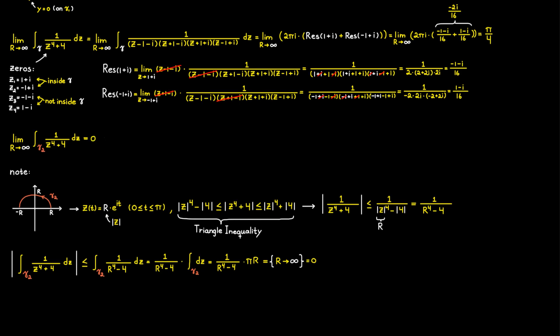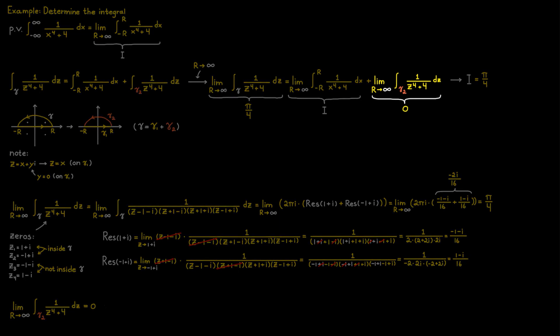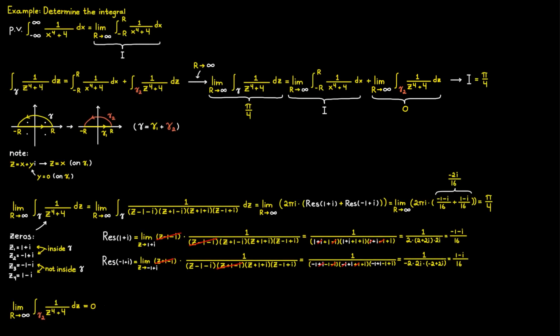Inserting this result, we find that i equals pi divided by 4. In short, we used Cauchy's residue theorem to get the left side of the equation, and the limit on the right is equal to zero. This will always be the case as long as the denominator of function f is 2 degrees or higher compared to the numerator.